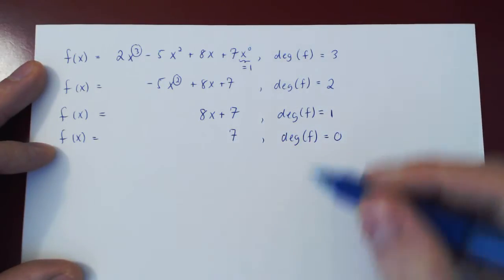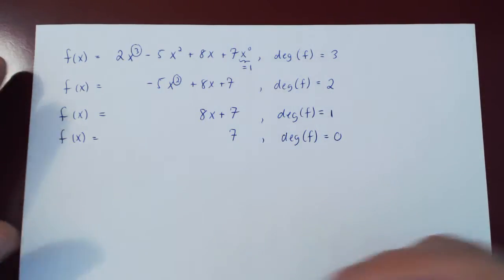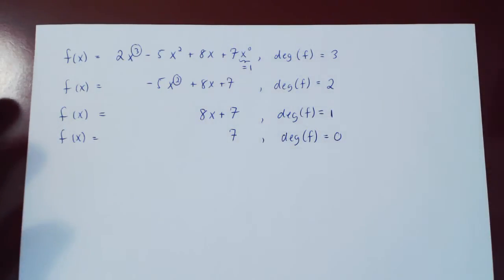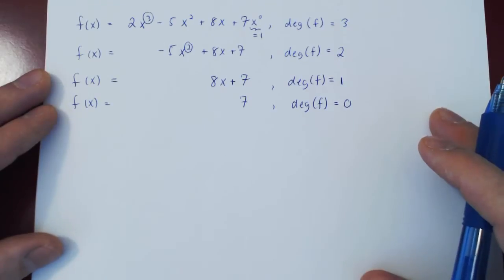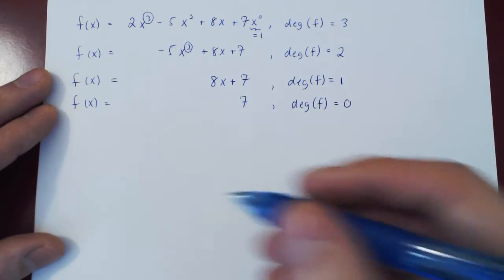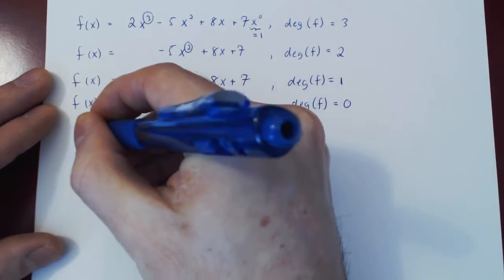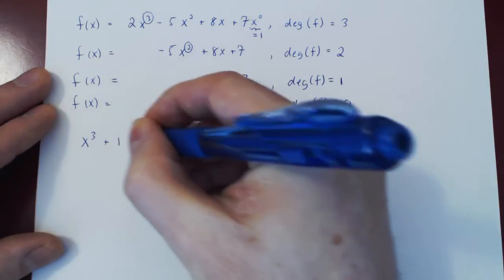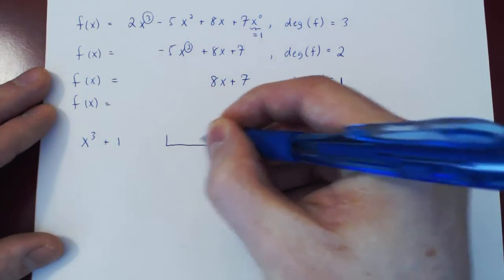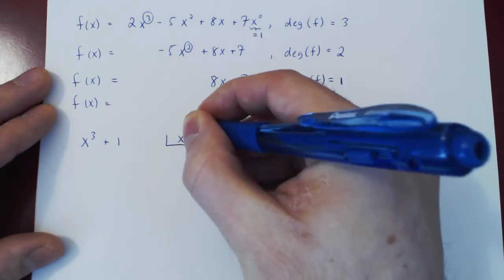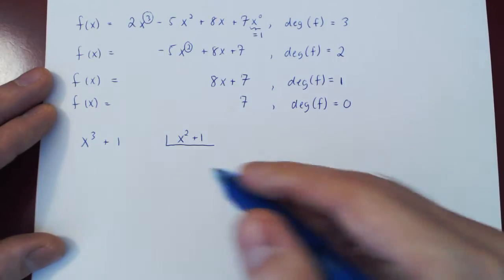Now let's see how the idea of degree fits in with the idea of long division. Let's look at two short examples. For example, let's divide x cubed plus 1 by x squared plus 1, and see what comes out of this.